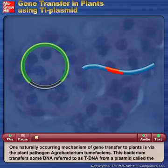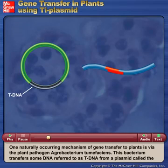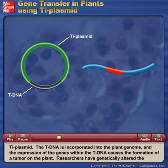One naturally occurring mechanism of gene transfer to plants is via the plant pathogen Agrobacterium tumefaciens. This bacterium transfers some DNA referred to as T-DNA from a plasmid called the Ti plasmid. The T-DNA is incorporated into the plant genome, and the expression of the genes within the T-DNA causes the formation of a tumor on the plant.